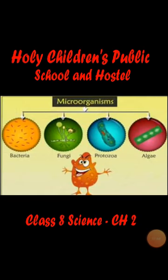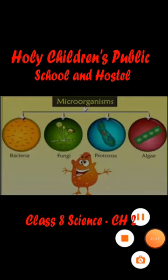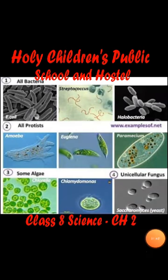Microorganisms are divided into two categories: unicellular microorganisms and multicellular microorganisms. Unicellular microorganisms are made up of a single-celled body and can be divided into two categories: plant microorganisms and animal microorganisms. Plant microorganisms consist of algae like Chlamydomonas, Chlorella, fungus, yeast, and bacteria.